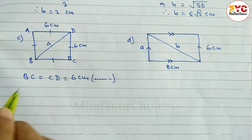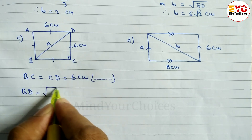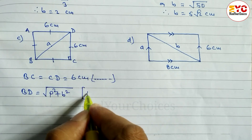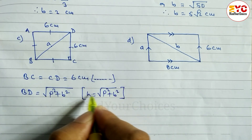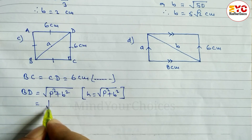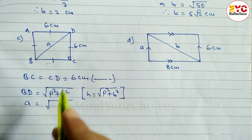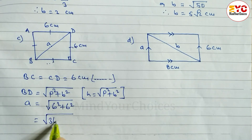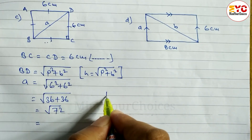We have to find BD, which is the value of a. Using the Pythagorean theorem: h is equal to root under p squared plus b squared. So a is equal to root under 6 squared plus 6 squared, which is root under 36 plus 36, giving us root under 72.